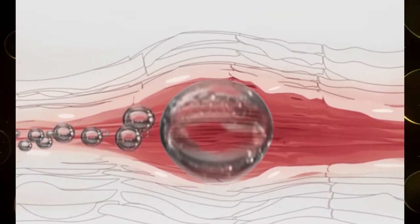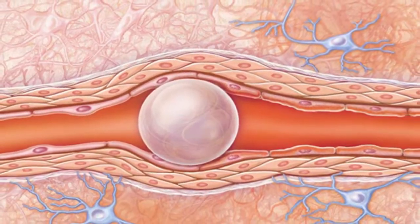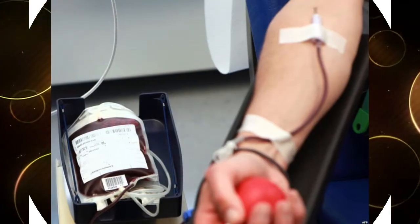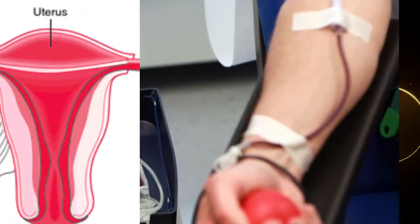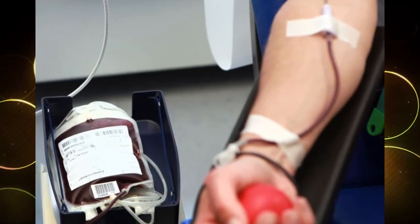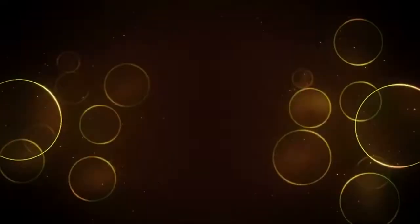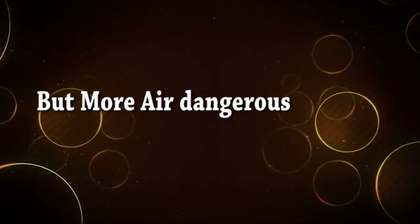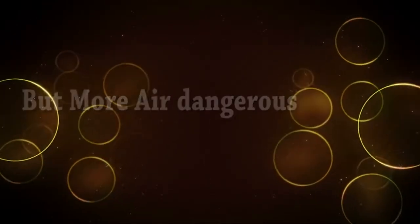Air embolism occurs when gas bubbles within the circulation obstruct vascular flow. Air can enter the circulation during delivery or abortion, surgery to the head and neck region, prolonged inflation of blood pressure cuffs, insufflation of fallopian tubes, blood transfusion using positive pressure, and during hemodialysis. Gas emboli generally have no dangerous effects.